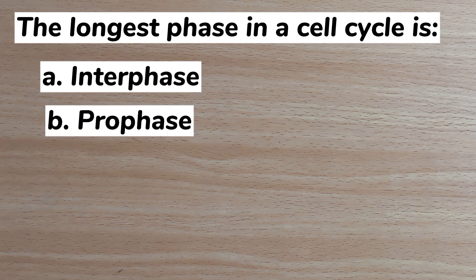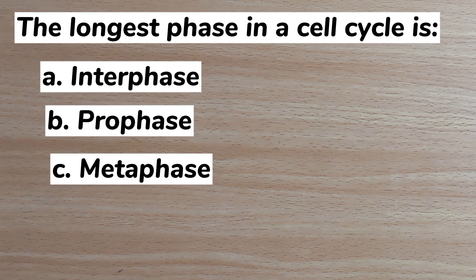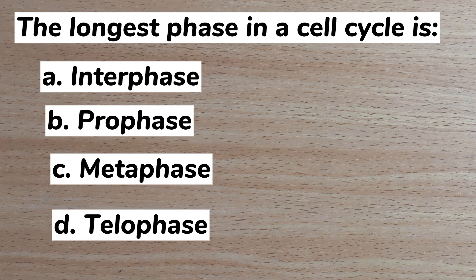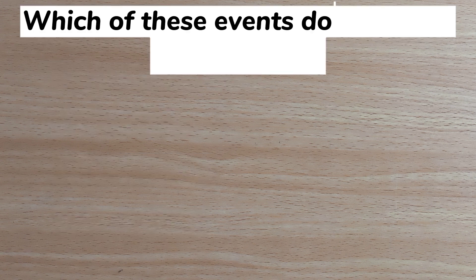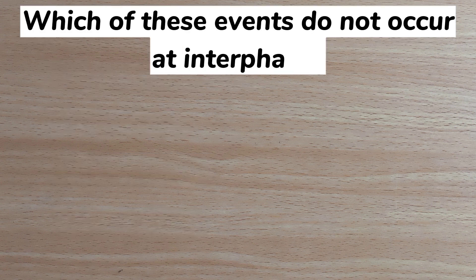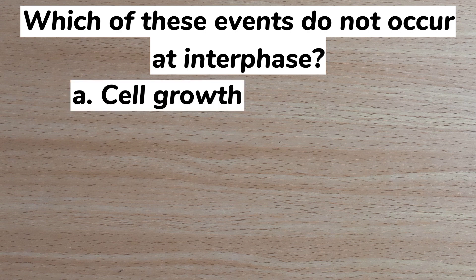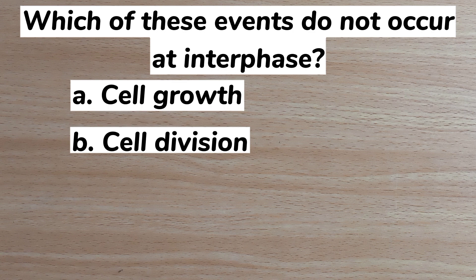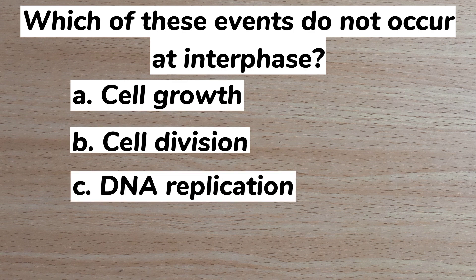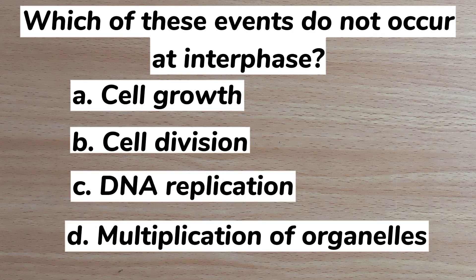Answer: A. Interphase. Number five: which of these events does not occur at interphase? A. Cell growth, B. Cell division, C. DNA replication, D. Multiplication of organelles. Answer: B. Cell division.